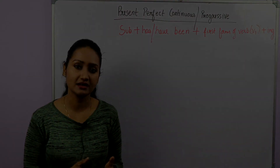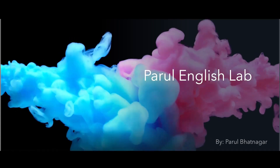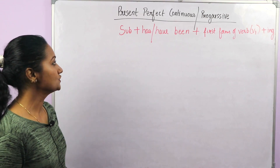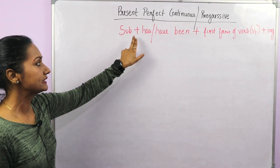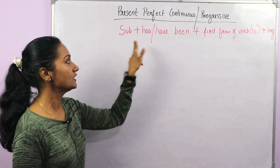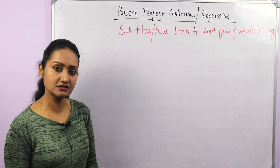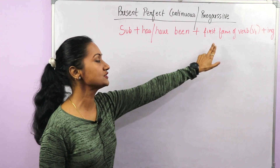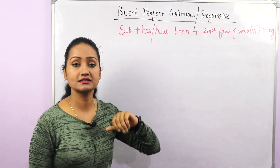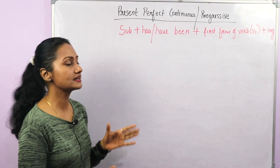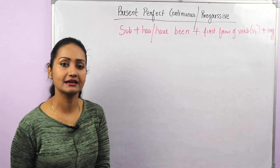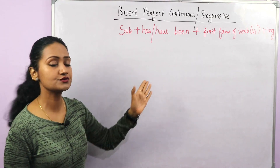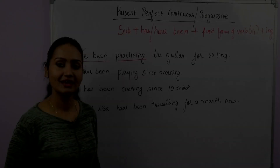It connects present and past. Let's go through its structure. First we start with the subject, then 'has' or 'have been'. We use 'has' with he, she, and it. Then 'been' plus the first form of the verb plus '-ing'. In continuous tense we use the first form of the verb plus '-ing'.